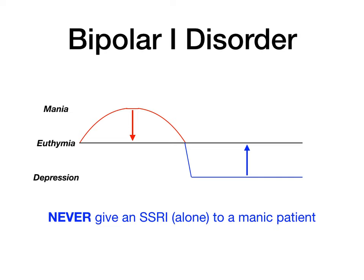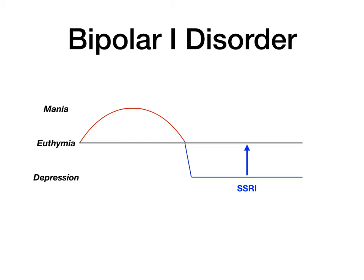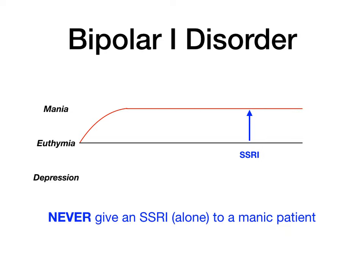Something incredibly high yield: you never give an SSRI alone to a manic patient or a bipolar 1 patient in the manic phase — or a bipolar 2 patient in the hypomanic phase. If you give an SSRI to treat what looks like depression in a bipolar patient, you push them past euthymia and flip them into mania by overcorrecting. So: never give an SSRI alone to a manic patient.